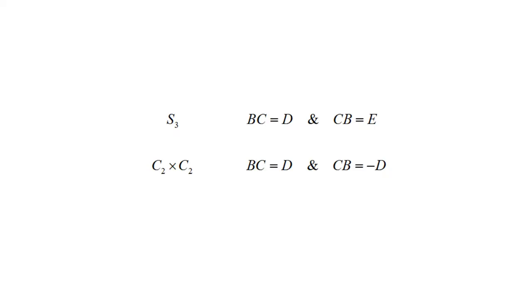The non-commutative algebras which emerge from non-commutative groups like the order 6 symmetric group S3 are non-commutative in that the multiplication of two variables in opposite orders gives two different variables as the two products. The non-commutative algebras which emerge from commutative groups like the order 4 direct product group C2 cross C2 are non-commutative in that multiplication of two variables in opposite orders gives two products that are the same variable but with different signs. In the S3 algebras, BC equals D but CB equals E. In the quaternions, BC equals plus D and CB equals minus D. The only way a commutative group can hold a non-commutative algebra is if the non-commutativity of the algebra is in the sign, not the variable.